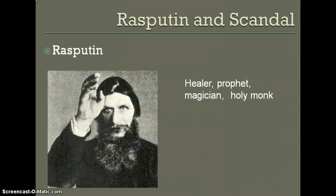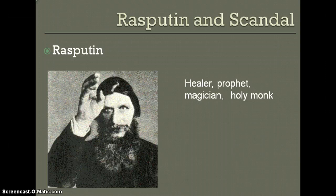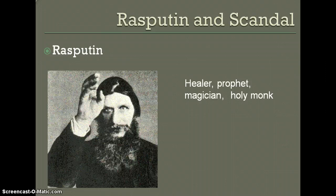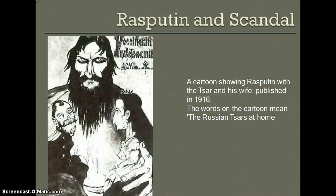Another problem was Gregory Rasputin, a monk. The Tsar's wife Alexandra came increasingly under his influence. He was believed to be a holy man and appeared to be able to heal the Tsar's son, Prince Alexis, who was sick with hemophilia and heir to the throne. Rasputin used his power to win effective control of the Russian government. This aroused envy and he was eventually murdered in 1916, but his influence over the royal family undermined the prestige of the Tsar and Tsarina. A cartoon shows Rasputin's influence over the two.